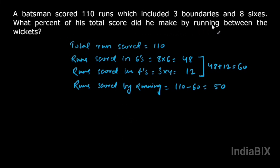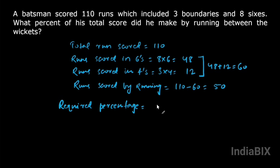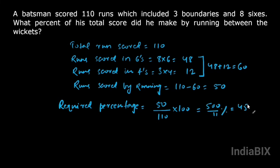Now we calculate what percent of his total score he made by running between the wickets. The required percentage equals runs scored by running between the wickets divided by total runs, multiplied by 100. That is 50 by 110 into 100, which equals 500 by 11 percent, or 45 and 5/11 percent. This is the required answer.